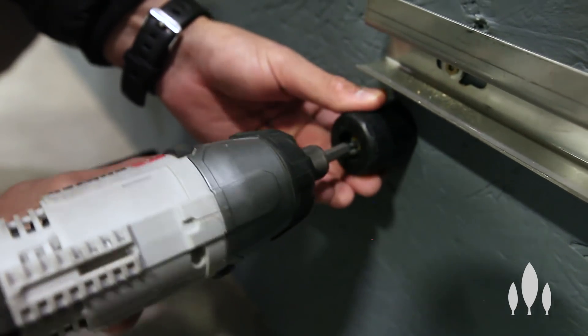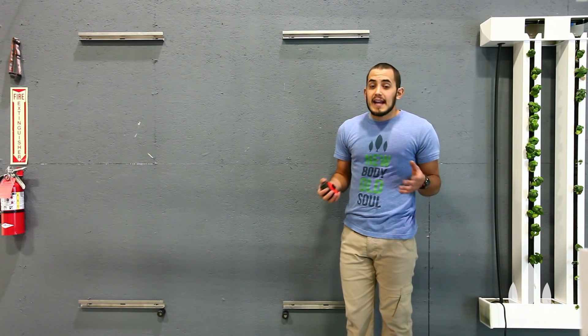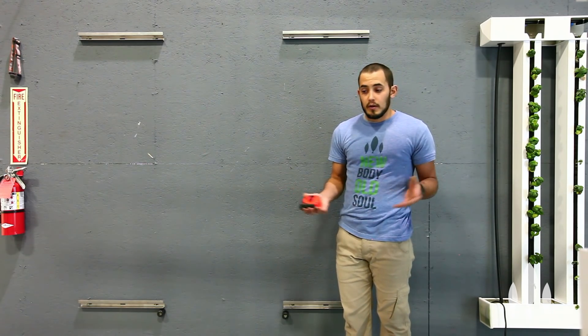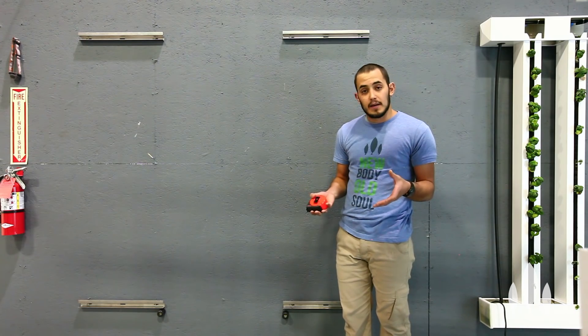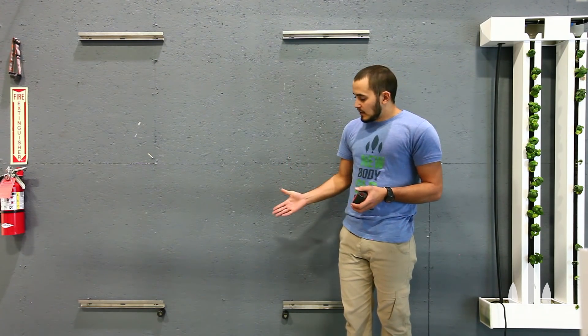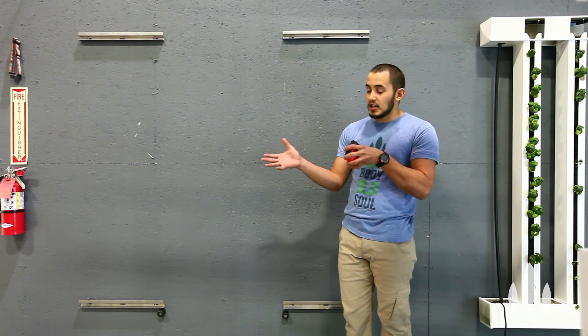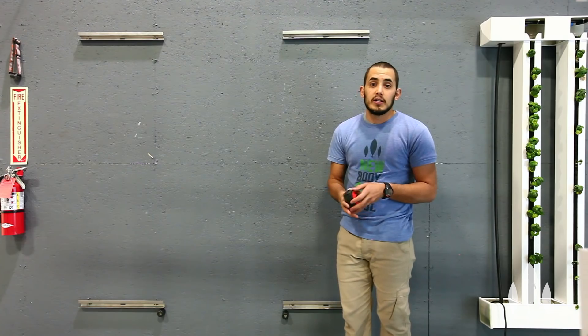And the reason that we use these rubber bumpers is because the gutter carries about 95% of the weight of the entire farm wall. The water, the towers, the crops, it all sits on that bottom gutter. And that bottom gutter can start to sag over time. What these rubber bumpers do is they give that gutter backing. And it keeps the gutter nice and square and keeps that farm wall looking good over time.